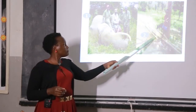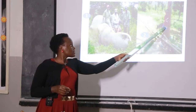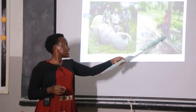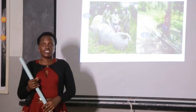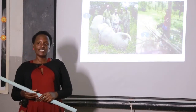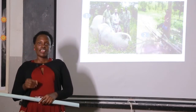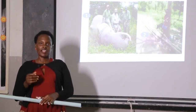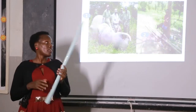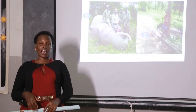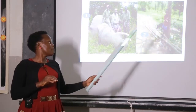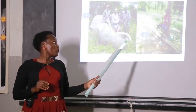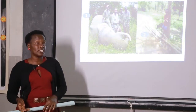This boy is leaning on a tree. The word is 'lean' — spelled L-E-A-N. In past tense it becomes 'leaned.' In a sentence: The boy leaned against a tree.